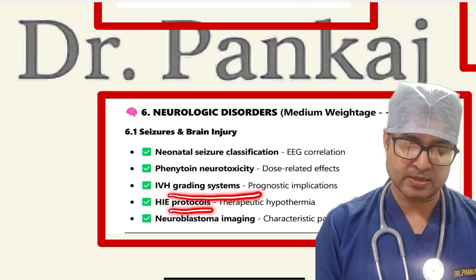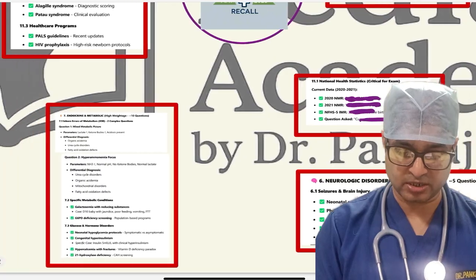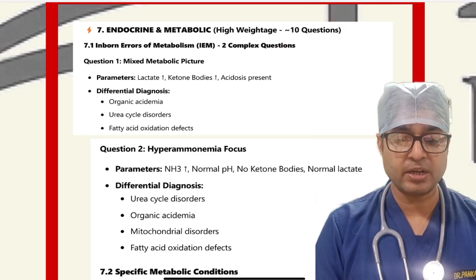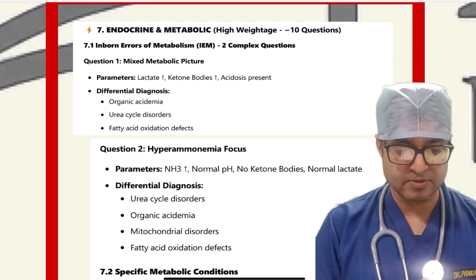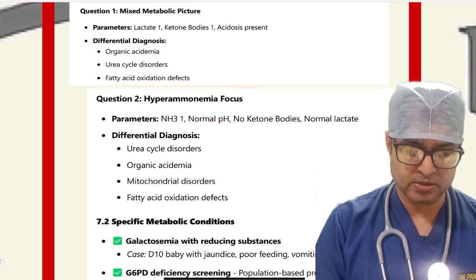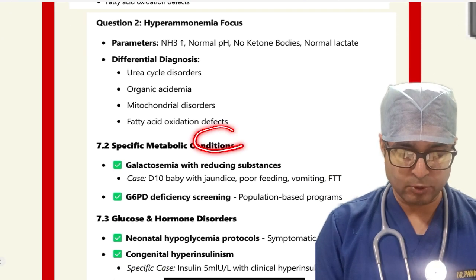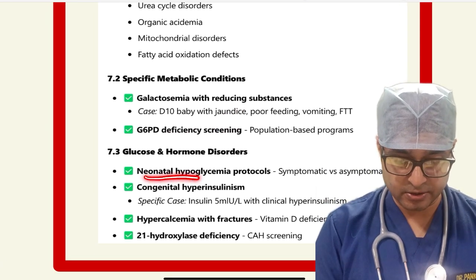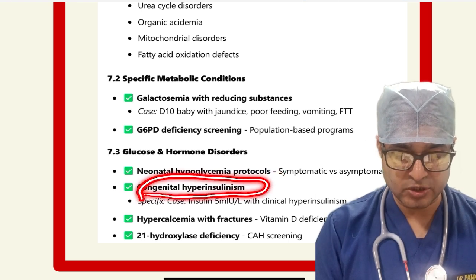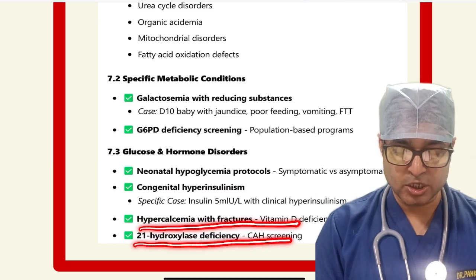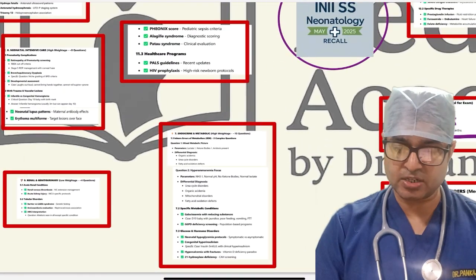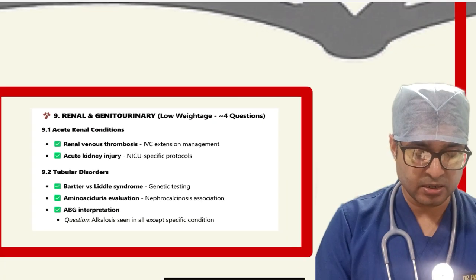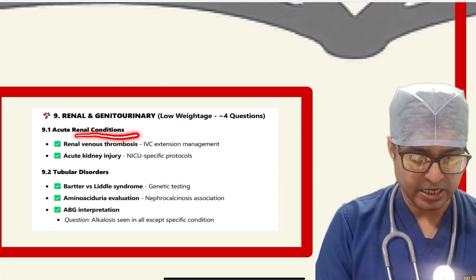Endocrine and metabolism had around 10 questions. Inborn errors of metabolism included two complex questions with mixed metabolic patterns. Hyperammonemia had two to three questions on specific metabolic conditions like galactosemia with reducing substances and G6PD screening. Glucose and hormone disorders covered neonatal hypoglycemia protocols, congenital hyperinsulinism criteria, hypercalcemia with fractures, 21-hydroxylase deficiency, and congenital hypothyroidism screening — making neonatal endocrinology very important in this exam.